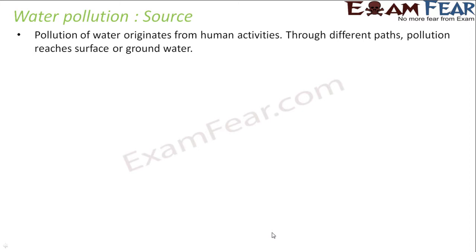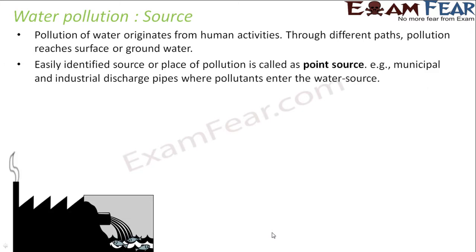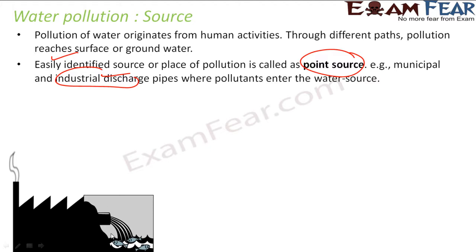Water pollution originates from human activities. The various sources are called point source and non-point source. They generally occur because of human activities and through different paths finally reach ground water or the ocean. A point source is one you can easily identify — for example, municipal and industrial discharge pipes, factory discharge pipes. You know there are some factories in a town, each discharging polluted water into a river. These are fixed points from which we get water pollution, and you can control that.